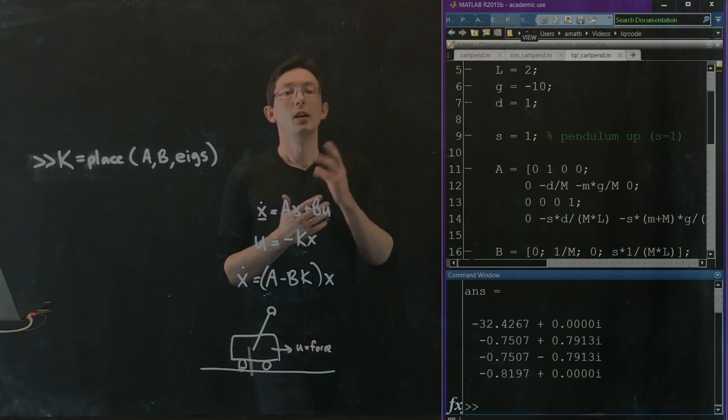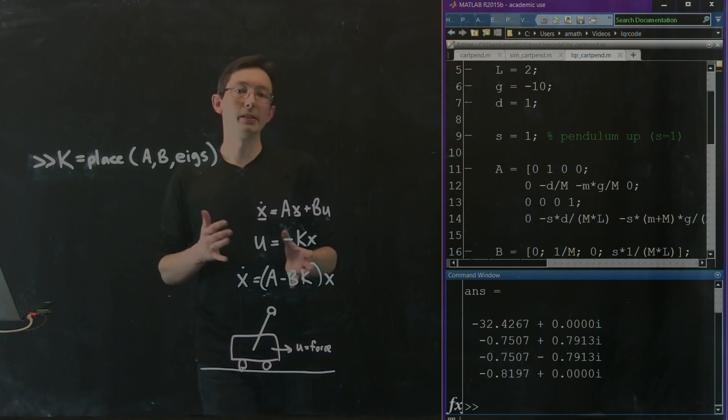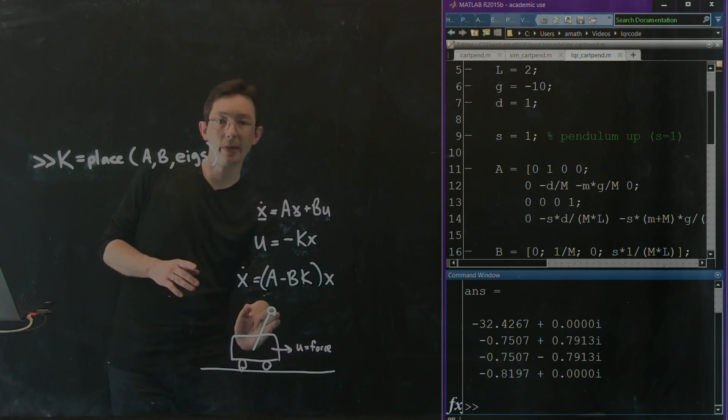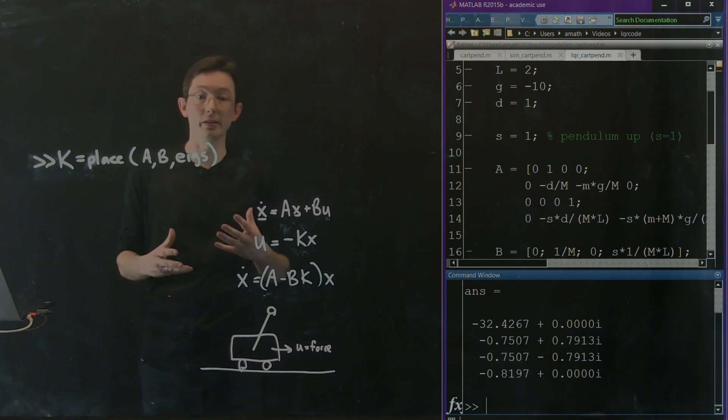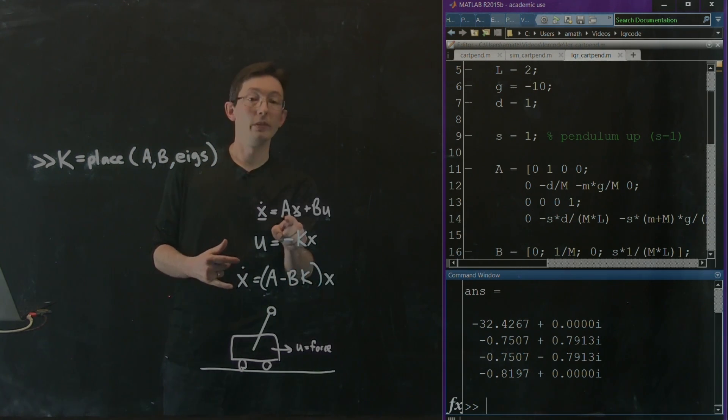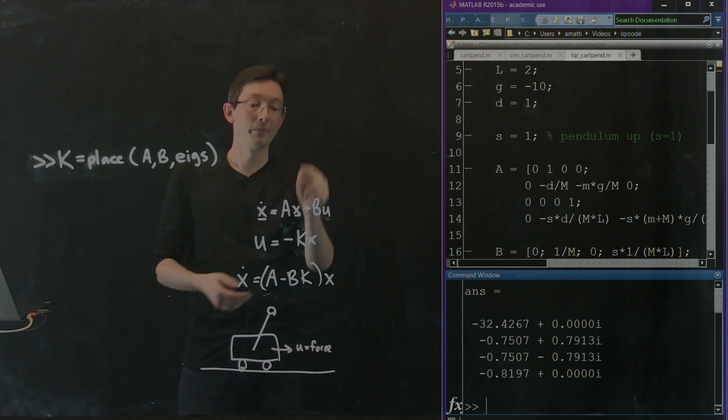Okay, welcome back. So in the last few segments, we've taken this inverted pendulum on a cart. We have simulated the full nonlinear system without control. We've linearized about the fixed point where the pendulum's up to get an A matrix and a B matrix.